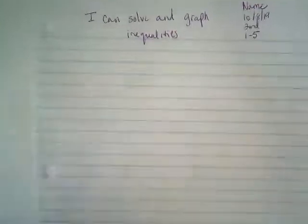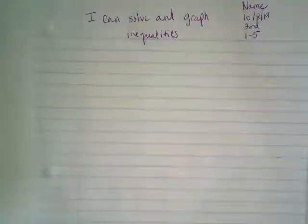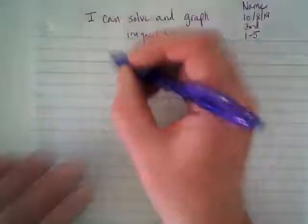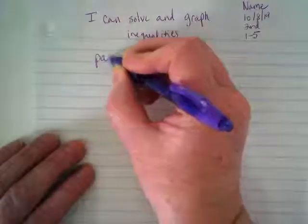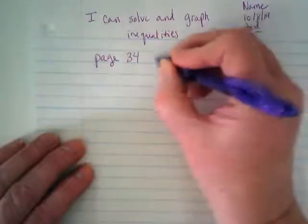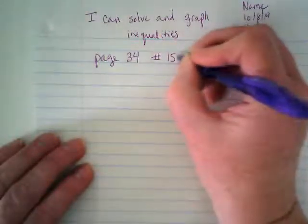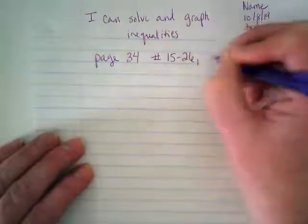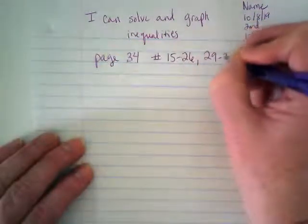This is what the top of your binder paper should look like. And we are going to do a few problems from the book today. The assignment is page 34, numbers 15 to 26, 29 to 32.